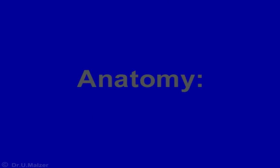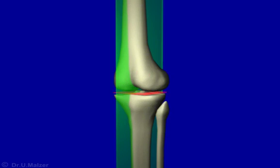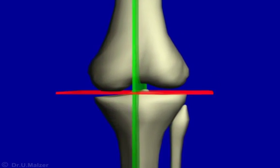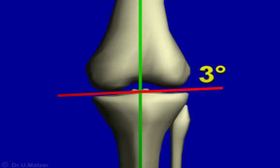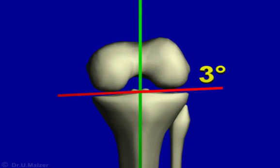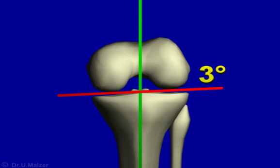To understand the technique for correct implant positioning in total knee arthroplasty, let's look at some anatomical details. The joint line of the knee is inclined from the horizontal in about three degrees of varus. This means that the tibial plateau slopes medially by this amount. On the femoral side, this is matched by greater bulging of the condyle distally and posteriorly.